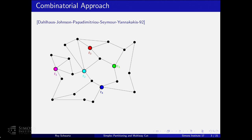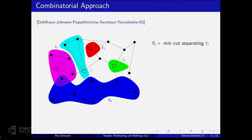Formally, we get a graph G, a special subset of terminals T of K terminals. The goal is to partition the vertices into K sets S1 up to SK, where the i-th piece contains the i-th terminal, and we minimize the number of edges crossing between different pieces. If you have only two terminals, this problem is easy—it's just min S-T cut. Dallas et al. were the first to consider the multi-way cut problem, giving a very simple and clean combinatorial approach.